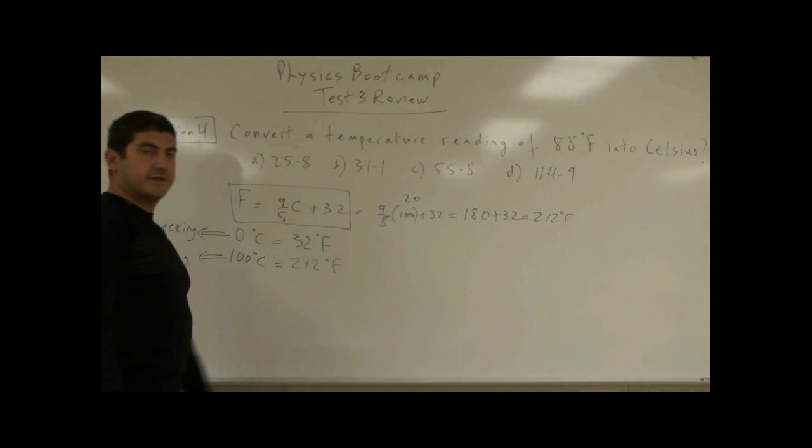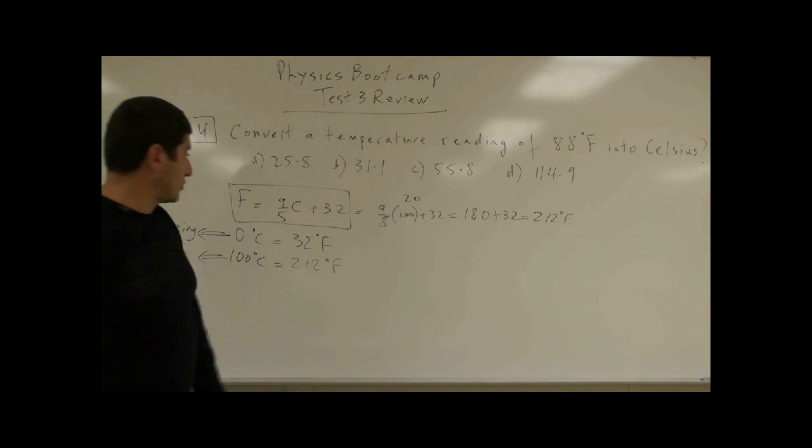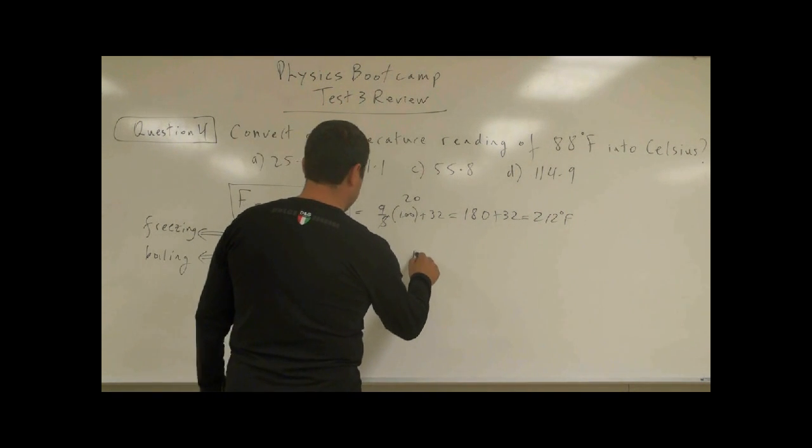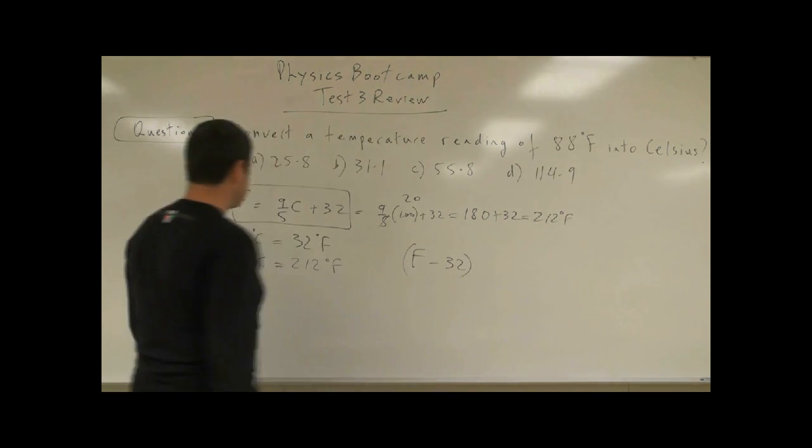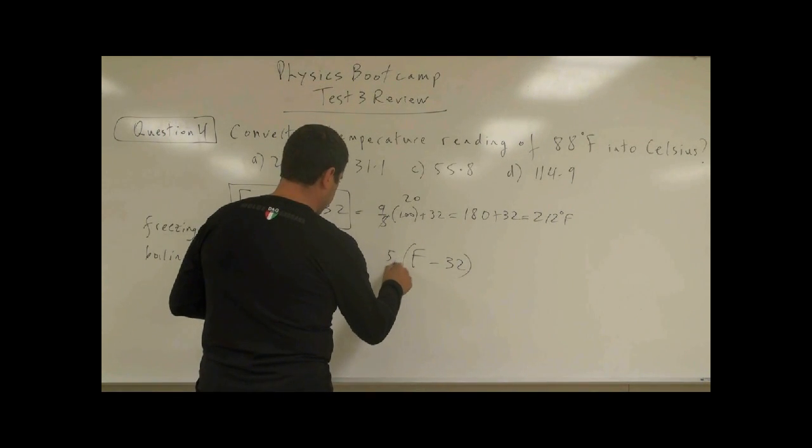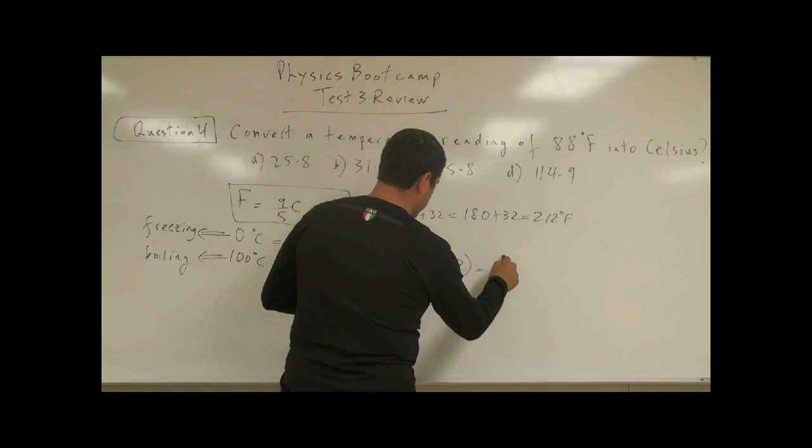So if I want to convert from Fahrenheit back to Celsius, what do I do? Well, I subtract 32 from both sides, F minus 32, and then I multiply both sides by 5/9, 5/9, and that's equal to the Celsius.